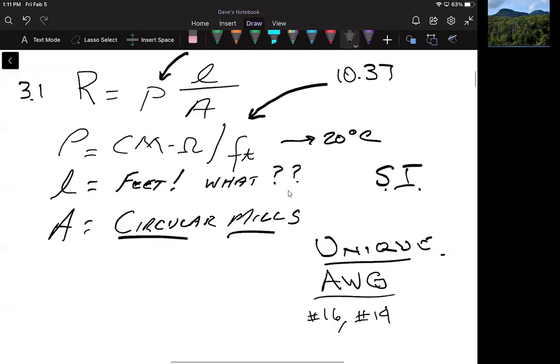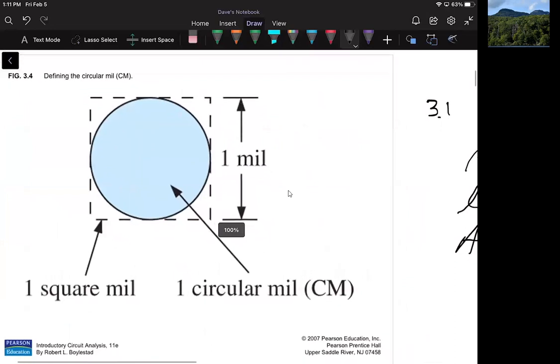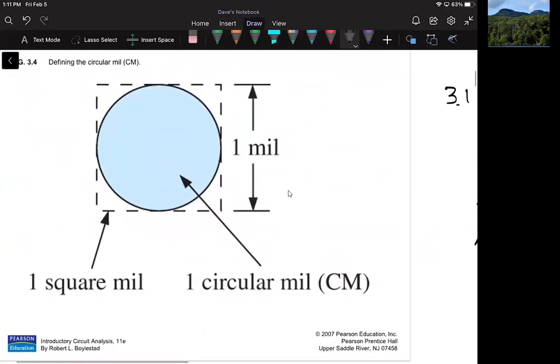Now, a circular mil is a defined quantity. So first, let's define what a mil is. One mil is equal to one thousandth of an inch. It's a very small number. And another way to write that is that there are 1000 mils in one inch. So we could go back and forth between those two things. And they both mean the same thing.